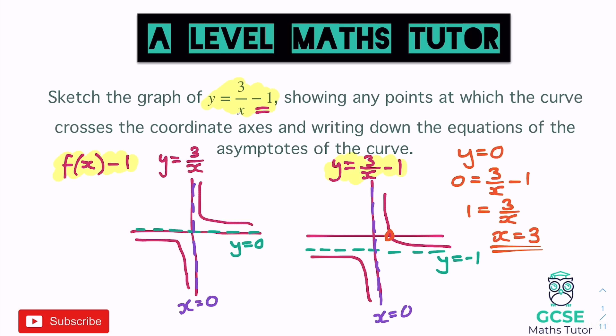We can now label that coordinate of 3 on our sketch. That's how we approach these questions. Next we'll look at moving the graph left and right rather than up and down.